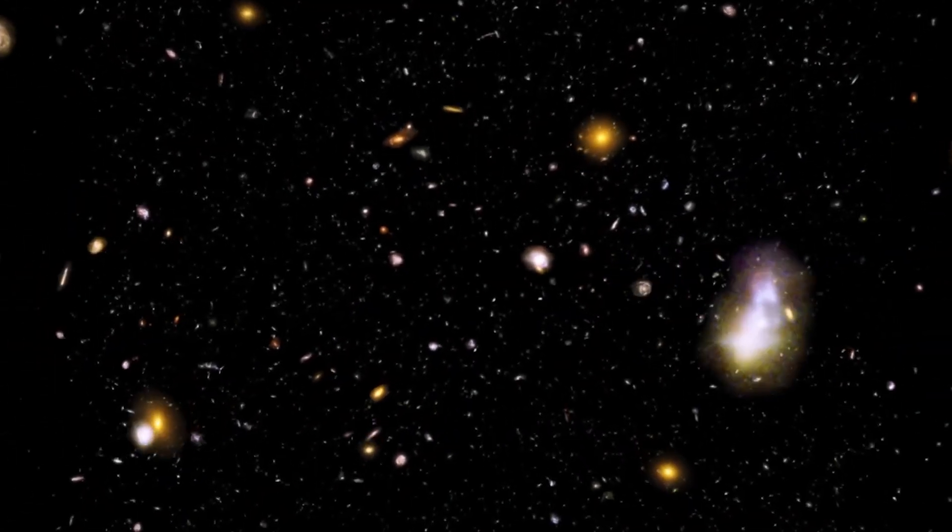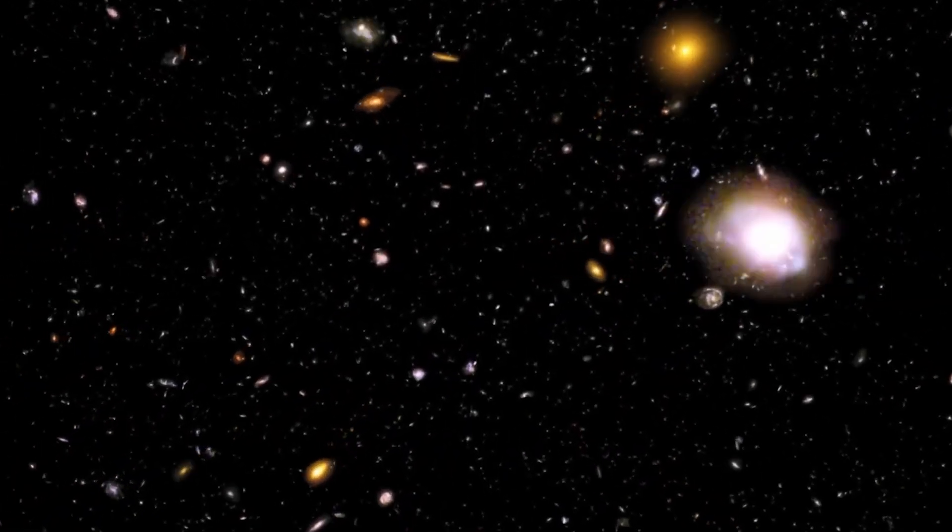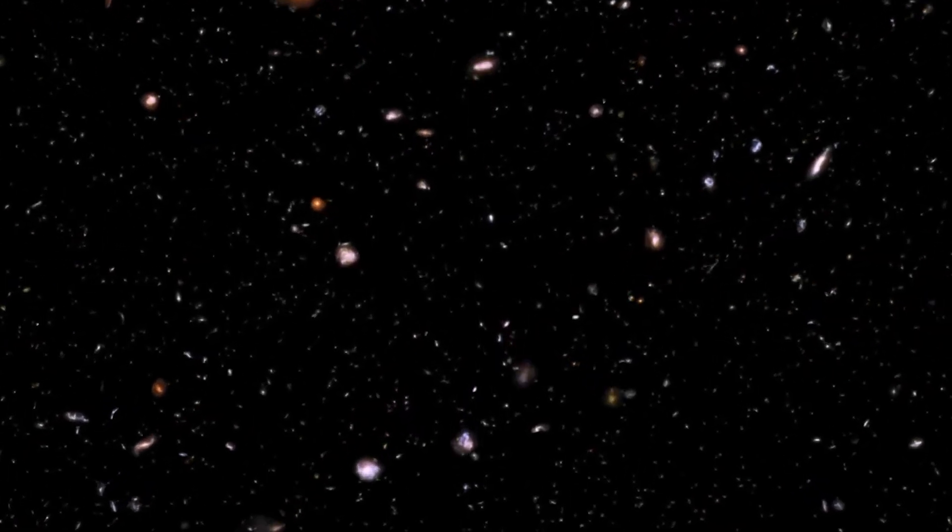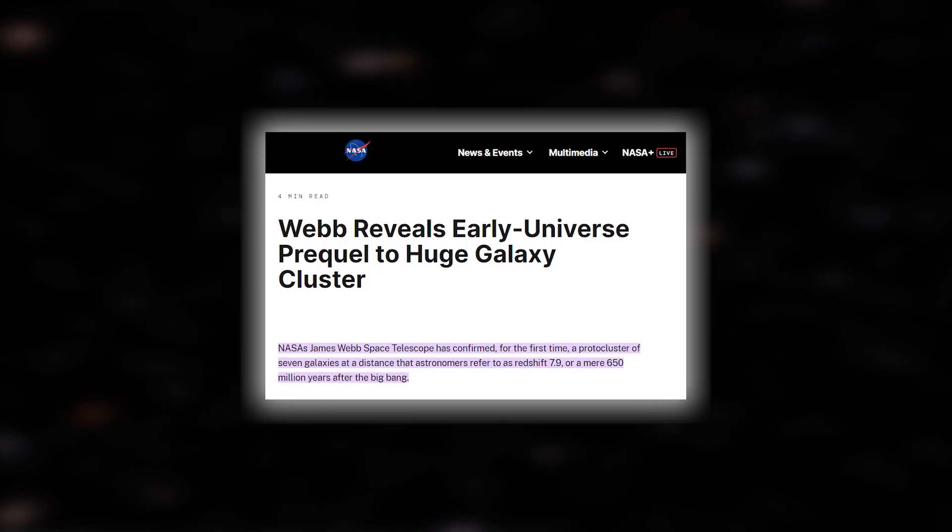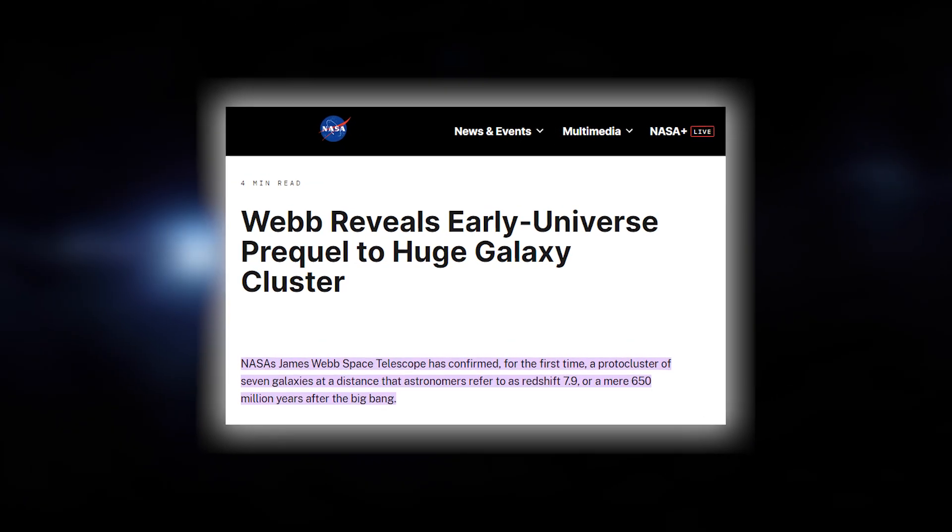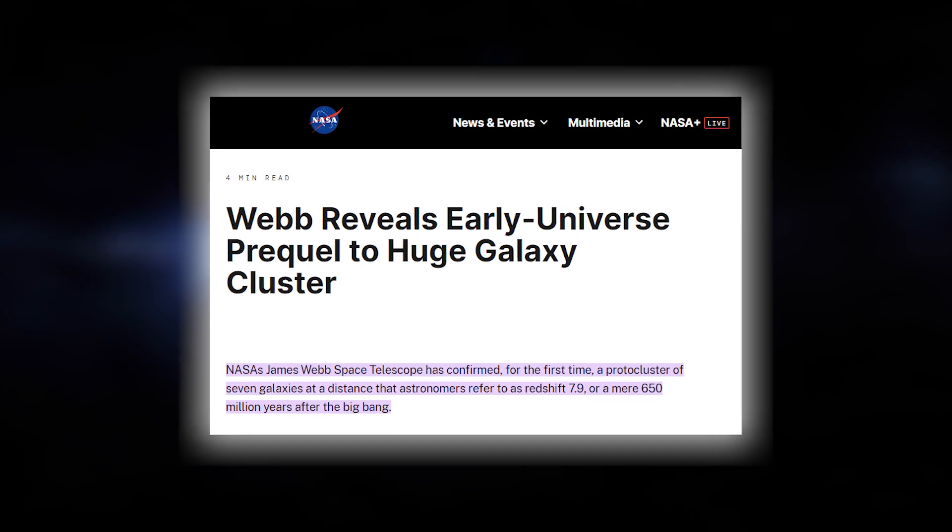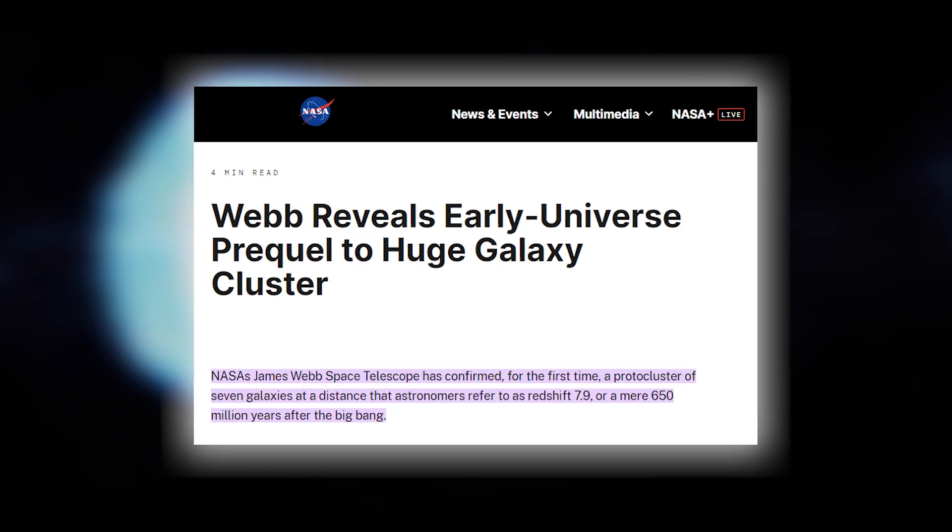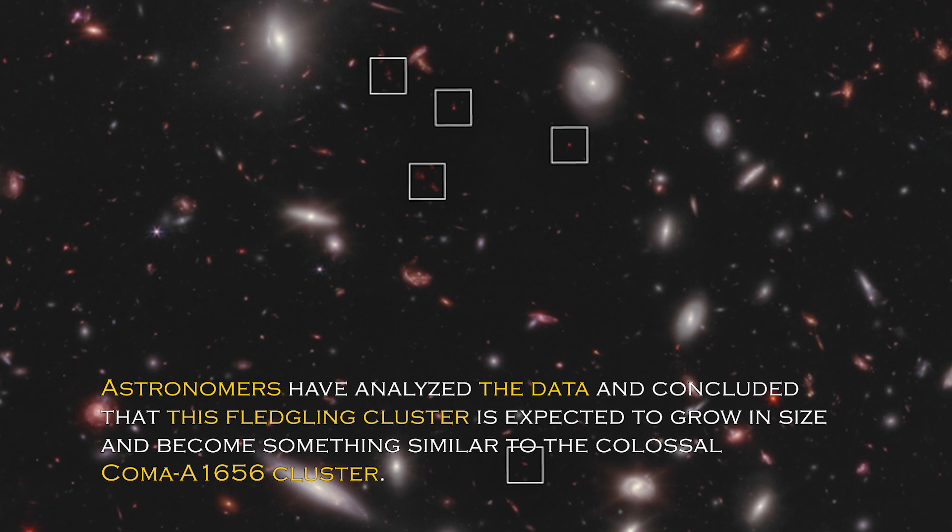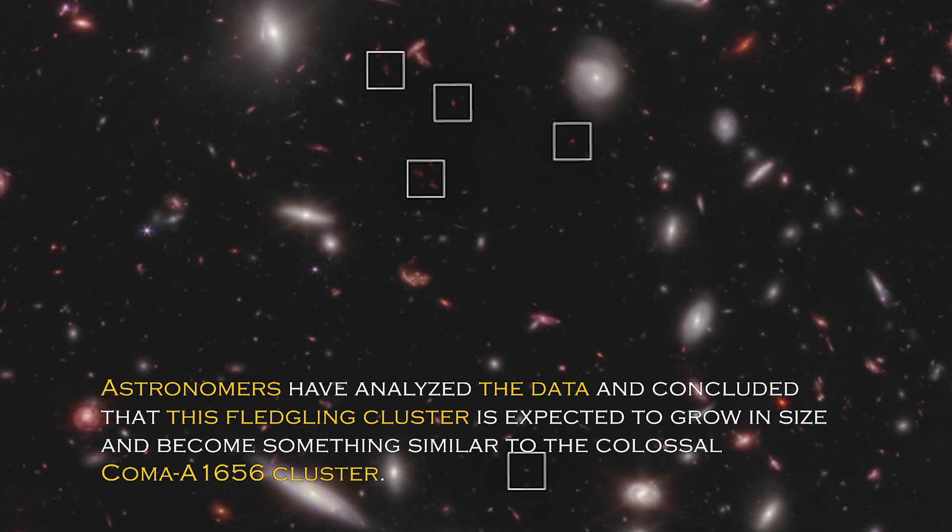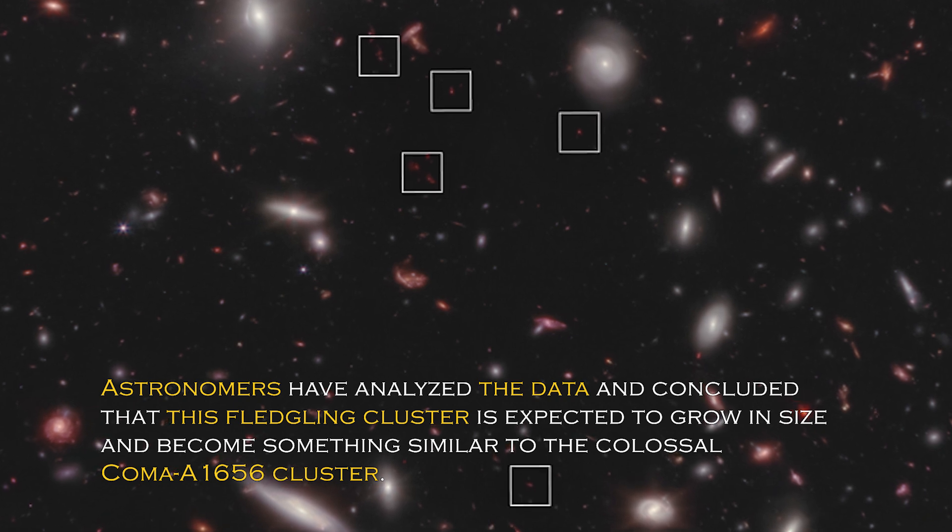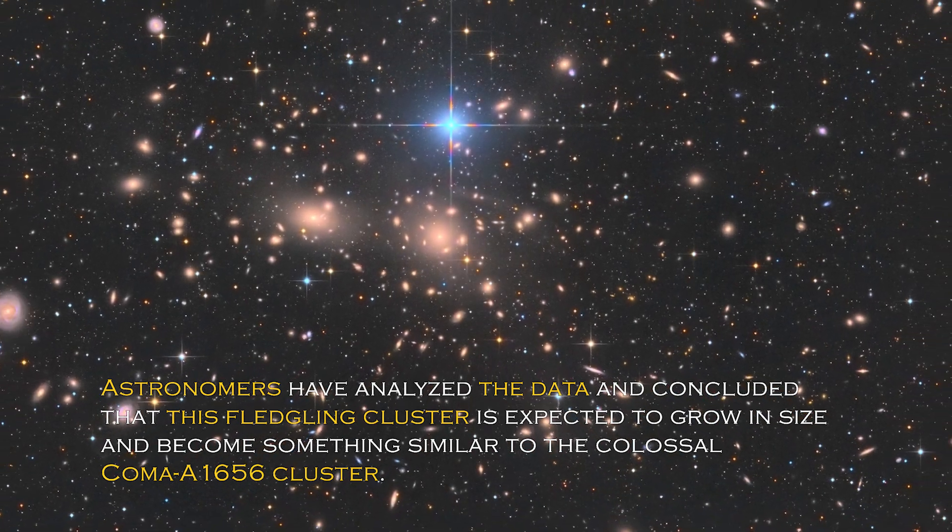Findings from the James Webb Space Telescope challenge what we thought we knew about the Big Bang, leaving scientists at a crossroads. NASA recently tweeted about a galaxy cluster that lies just 650 million years after the Big Bang, adding another intriguing piece to the puzzle. Astronomers have concluded that this fledgling cluster is expected to grow and become something similar to the colossal Coma A1656 cluster.